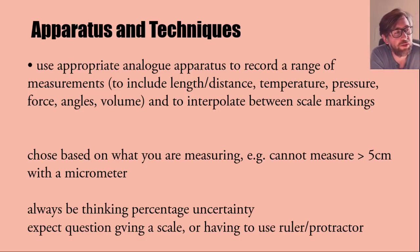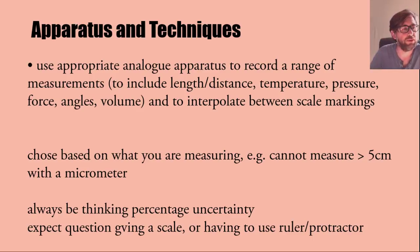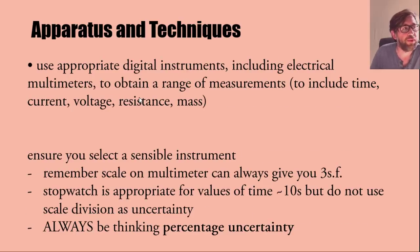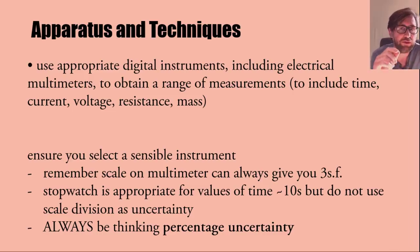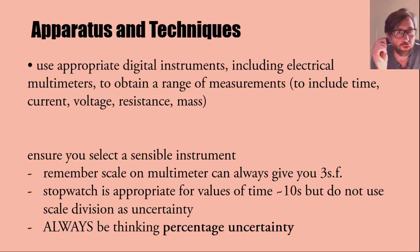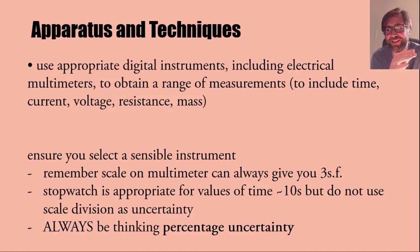Next is digital instruments — multimeters, for example, and a range of different things including timing. A multimeter can give you three significant figures, which is very important because it reduces your percentage uncertainty. You're only plus or minus 0.005, so you're reducing the size of the scale increments to reduce the percentage uncertainty. Always be thinking about percentage uncertainty in this paper.